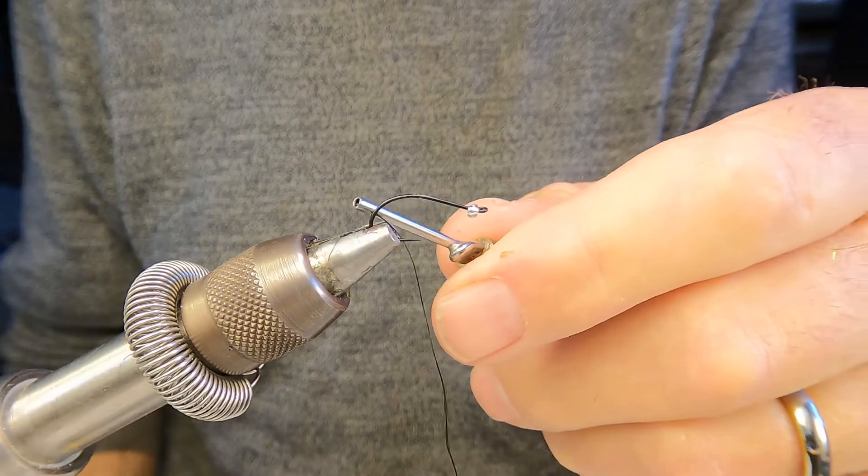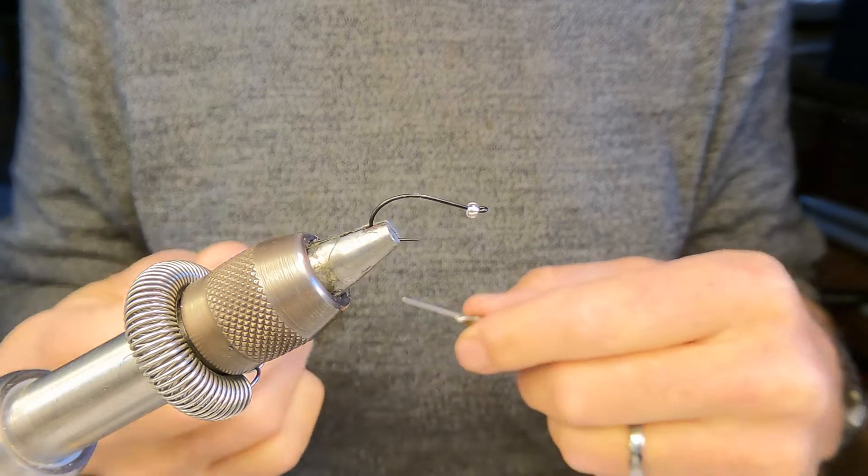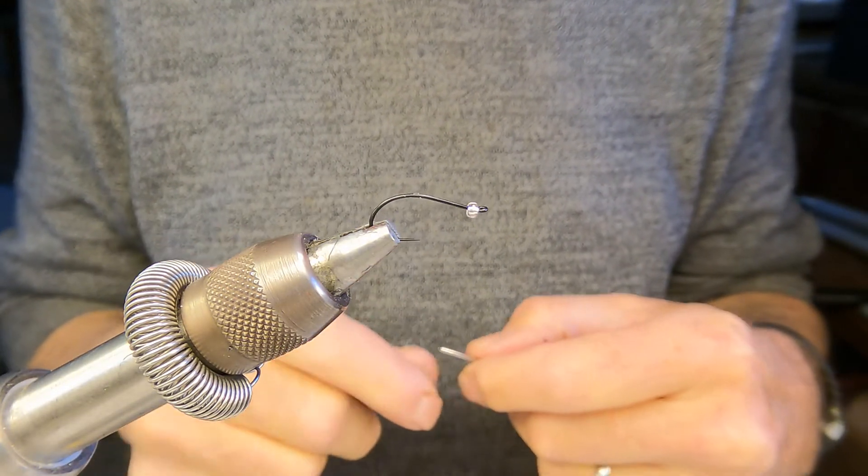We're tying the applicator beetle today. It's based on a Tiemco 206BL hook in size 10. I've already put on the glass bead—it's a silver glass bead which is going to look like the air bubble that aquatic beetles take.